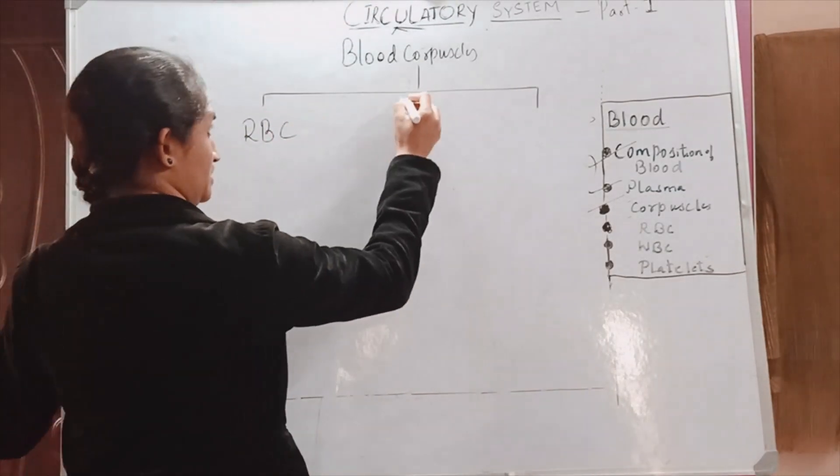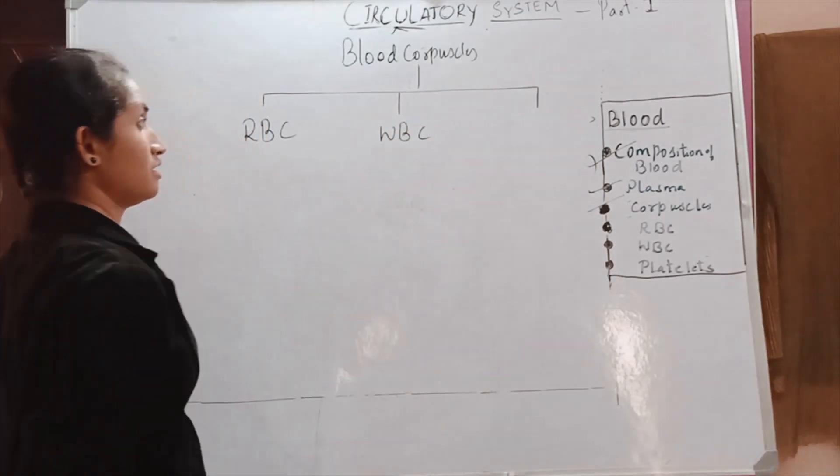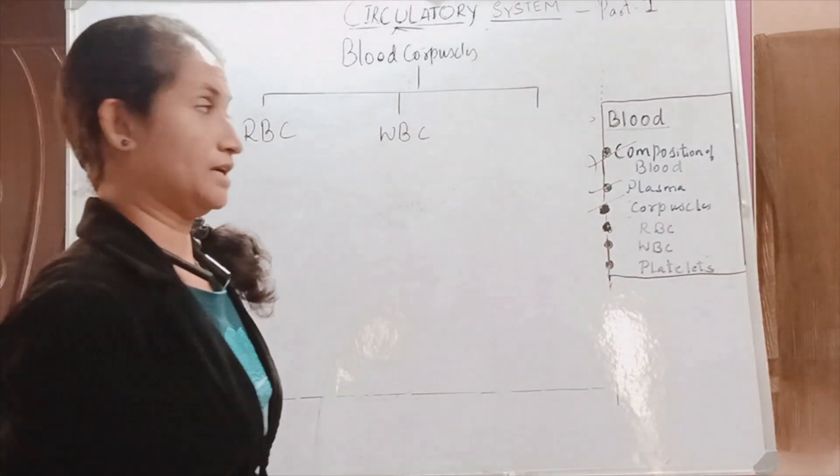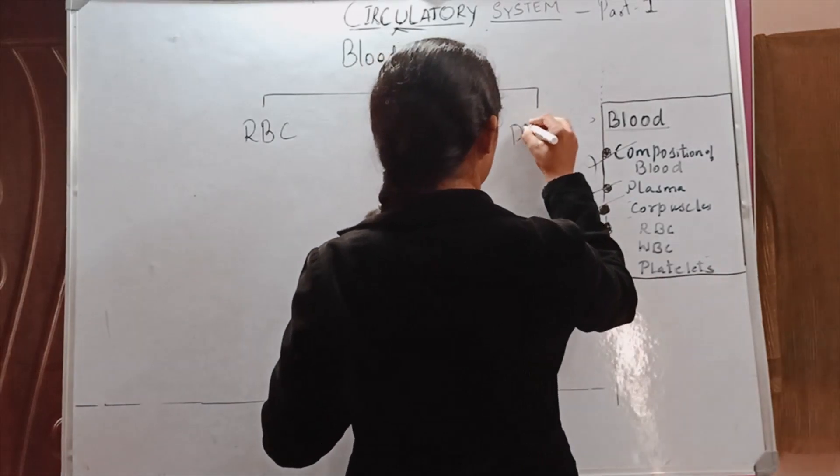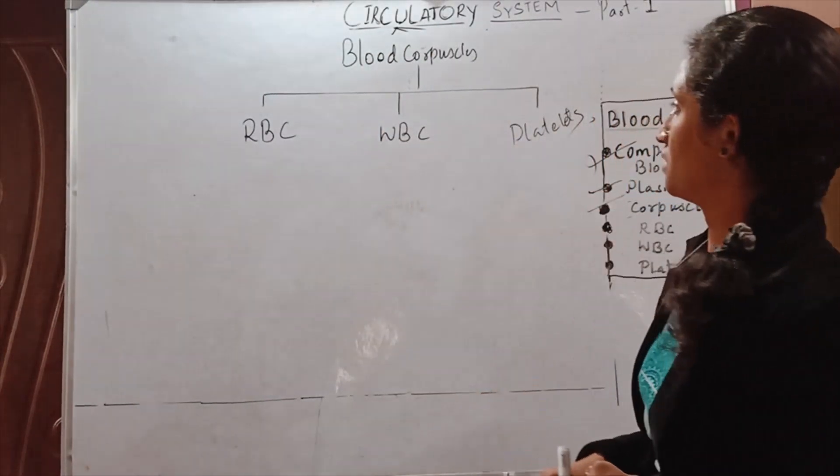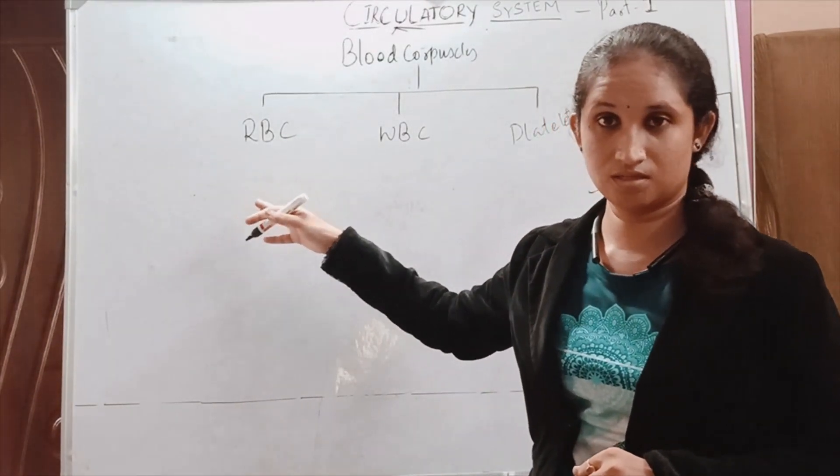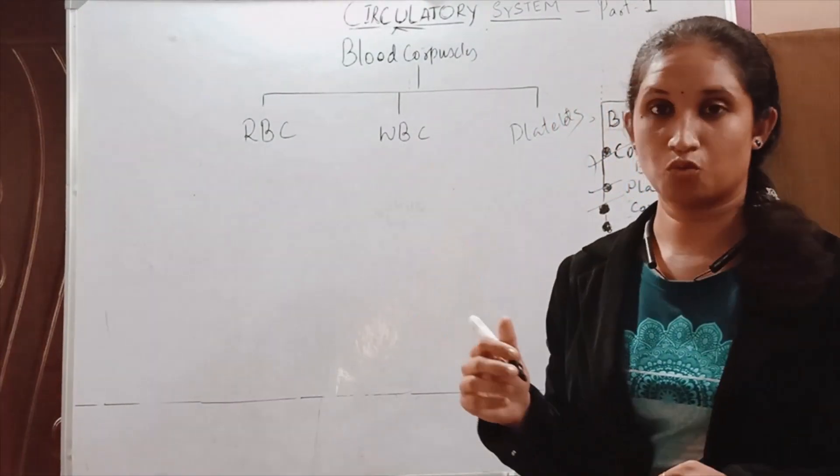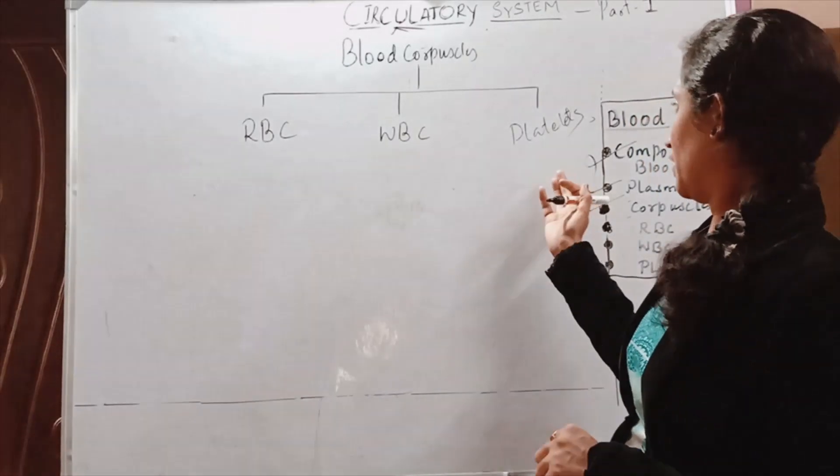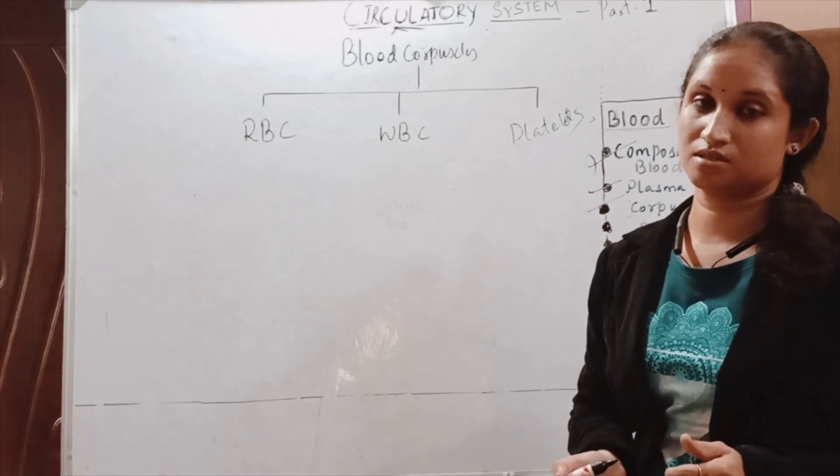One is RBC, other one is WBC, and platelets. The term RBC is red blood cells, WBC is white blood cells, and platelets are the three cells present in the blood.